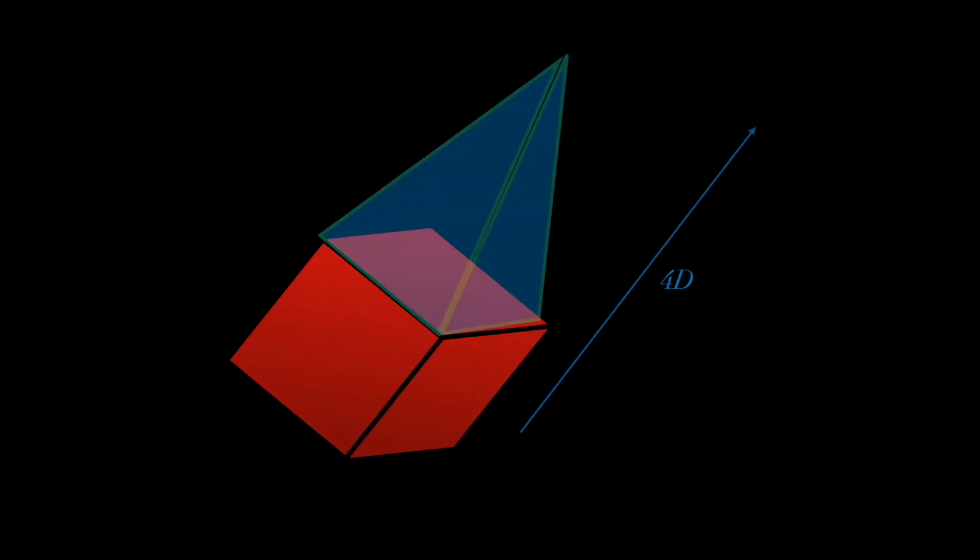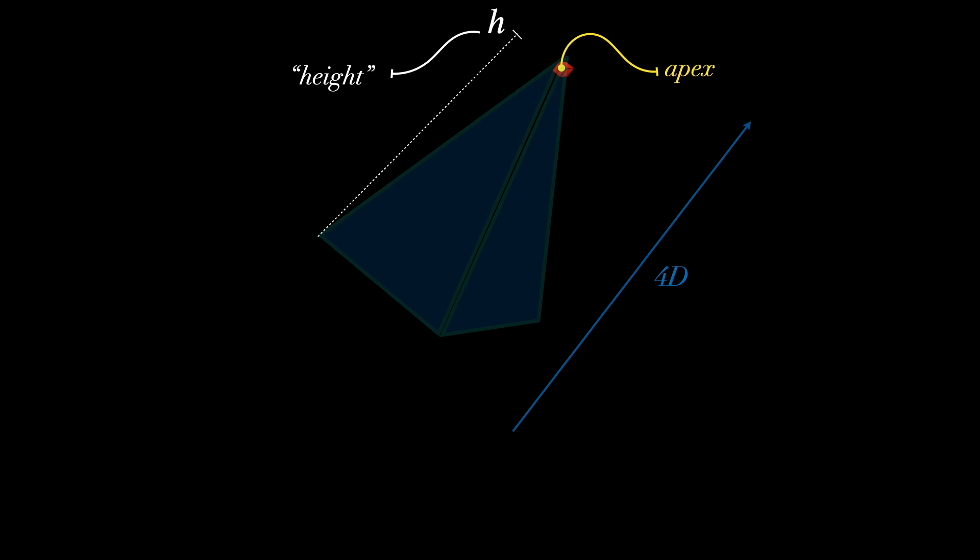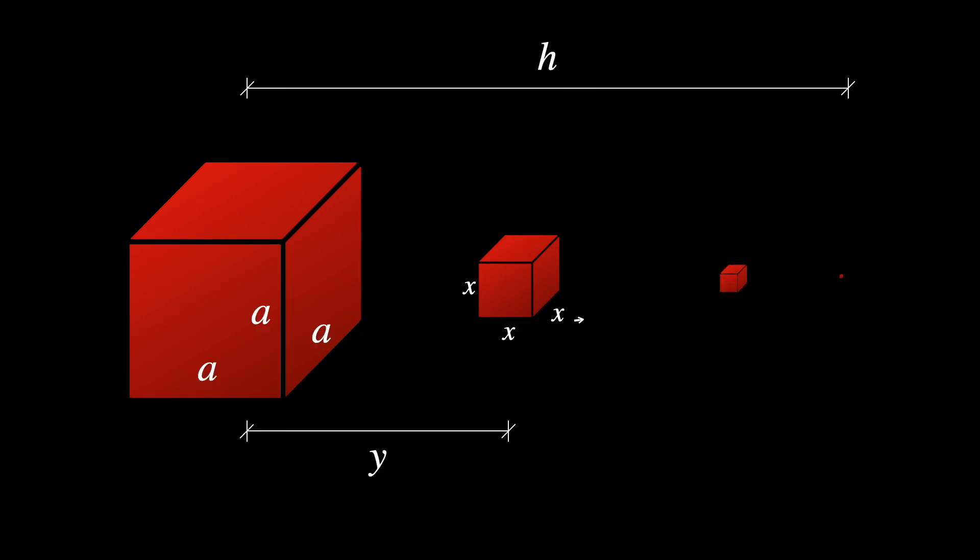Similarly, in the case of the hyperpyramid, as we move up the height along the fourth dimension, the cube with sides A shrinks in a linear motion until it becomes a dot, which is the apex, at maximum height h. In order to apply Cavalieri's principle so that we can conclude that they have the same hypervolumes in four dimensions, we need to assure that their cross-sectional volumes in three dimensions are the same for all heights y along the fourth dimension, with y ranging from zero to h. Let's do something similar to what we've done before. We see the cube here shrinking until it becomes a dot. This relation is the side of a cubic cross-section of the hyperpyramid as a function of the height y along the fourth dimension.